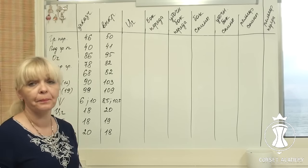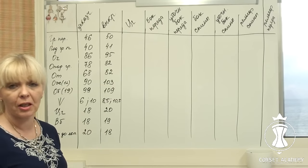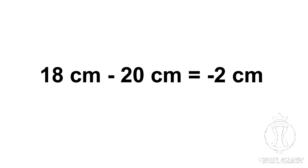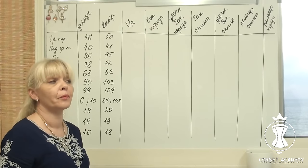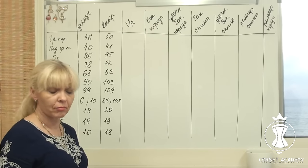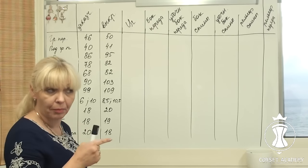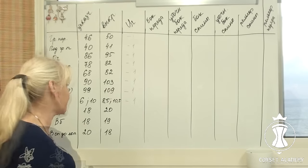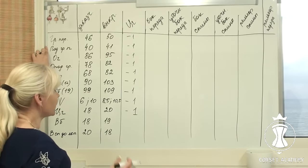Bust middle. My client's measurement is 18 cm and it is 20 cm on the pattern. 18 cm minus 20 cm equals negative 2 cm. It means I need to remove 1 cm from either side of the central front piece. I will simply shift the central front piece 1 cm inwards from the fabric fold line to make it smaller.